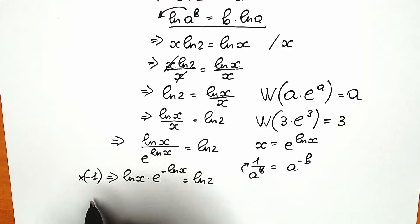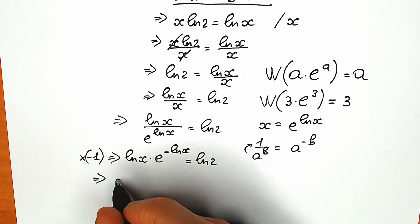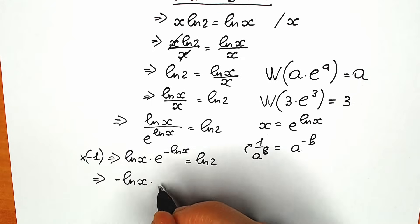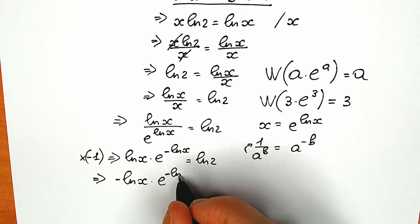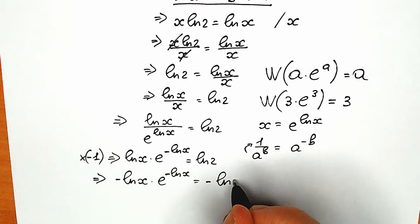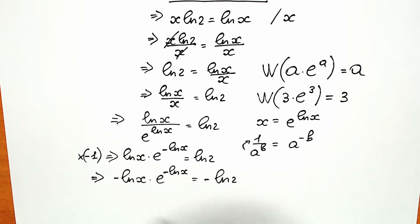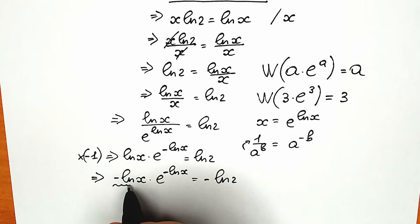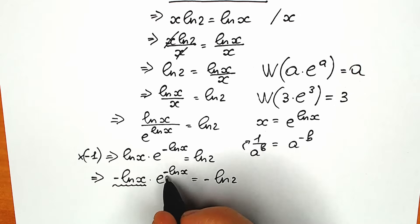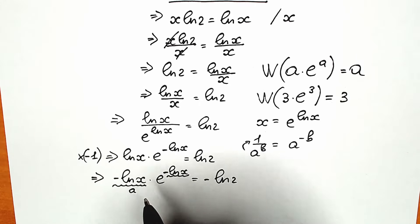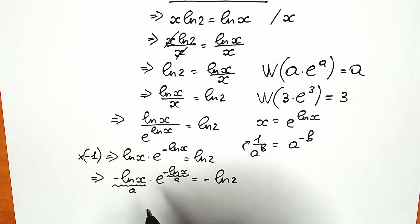When we multiply both sides by minus 1, we get: minus natural log x times e to the power minus natural log x equal to minus natural log 2. Now minus natural log x appears both as the multiplier and as the exponent — this is our a and our a. This is the perfect structure to apply the Lambert W function.